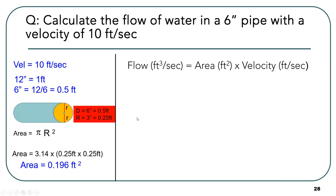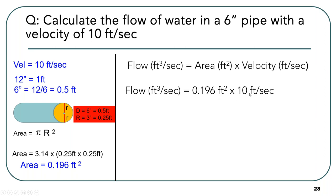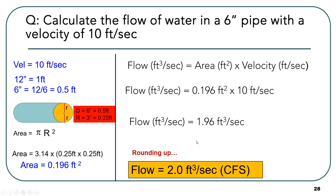Flow in cubic feet per second equals area times velocity: 0.196 ft² × 10 ft/s = 1.96 cubic feet per second, which rounds to 2 cubic feet per second, otherwise written as 2 CFS. These terminologies are interchangeable — cubic feet per second and CFS mean the same thing.